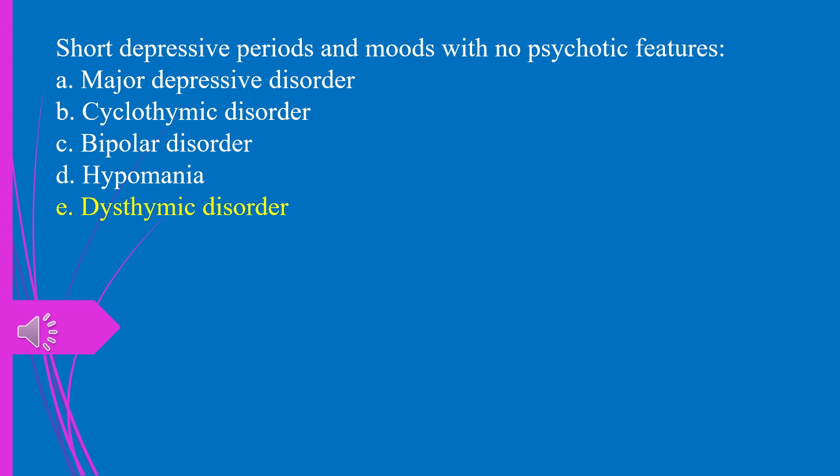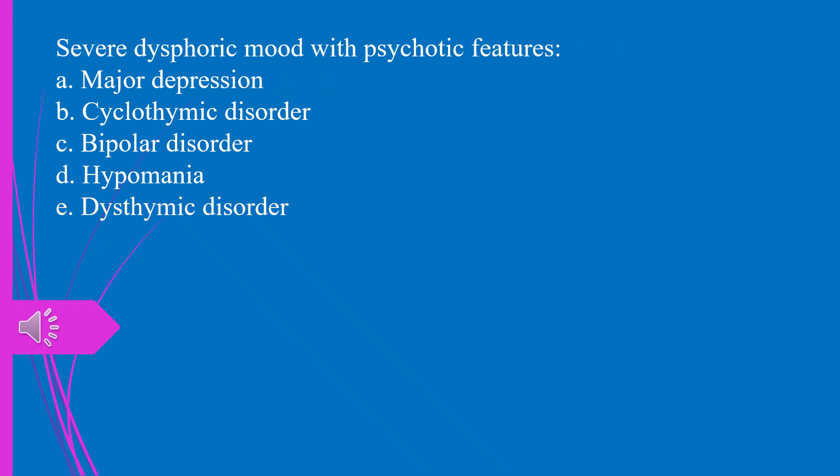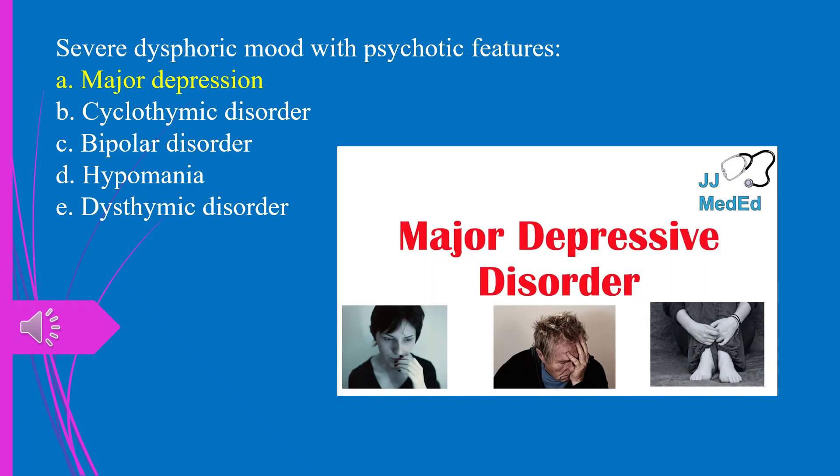Question 50. Severe dysphoric mood with psychotic features: a) major depression, b) cyclothymic disorder, c) bipolar disorder, d) hypomania, e) dysthymic disorder. The answer is a, major depression.